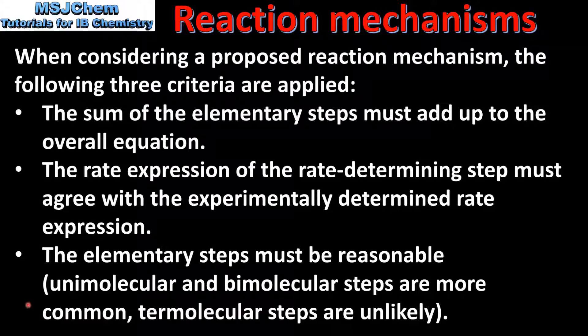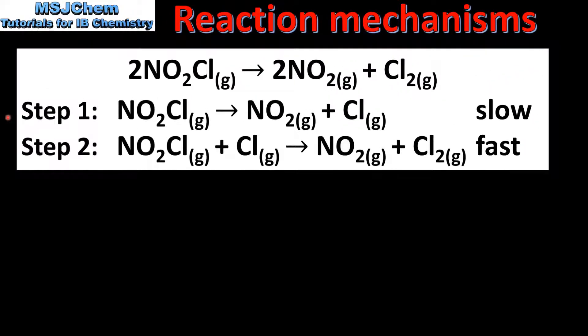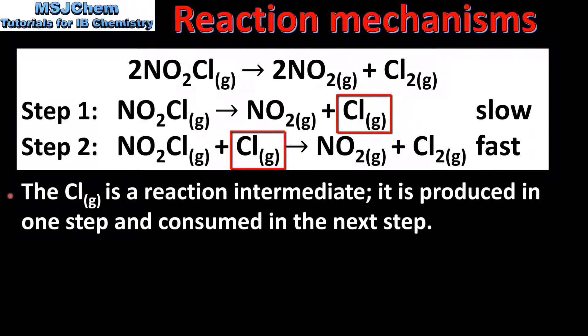Next we'll apply these three criteria to the reaction mechanism in the previous slide. The first step is to determine if the elementary steps add up to the overall equation. To do this we need to identify any reaction intermediates in the reaction mechanism. We can see that the chlorine atom is a reaction intermediate — it is produced in one step and consumed in the next. The chlorine atom is produced in step 1 and consumed in step 2.